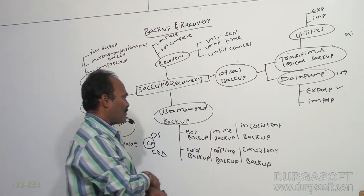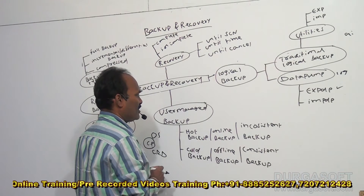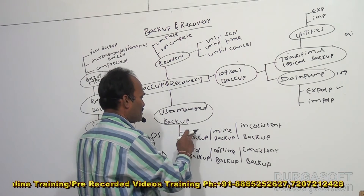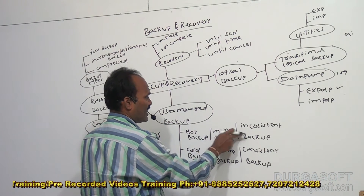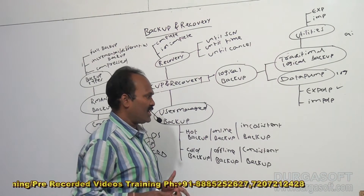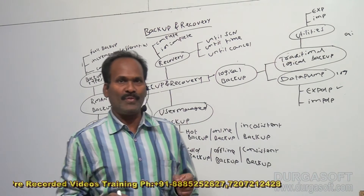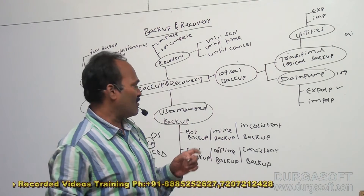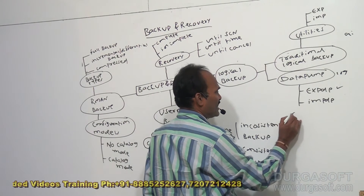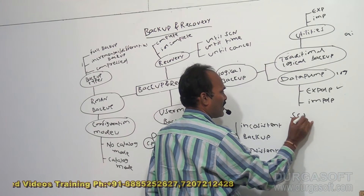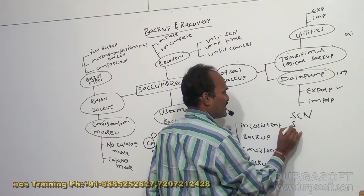Hot backup comes under user-managed backup. It is also called as online backup and also as inconsistent backup. Before explaining what is inconsistent and consistent backup, I must explain SCN, which stands for Sequence Change Number.